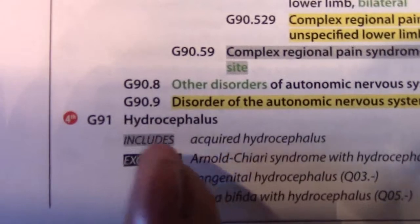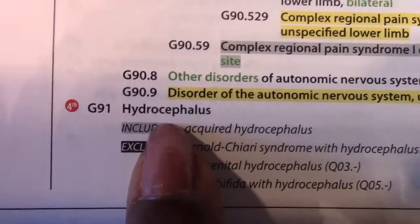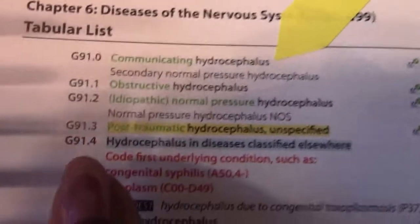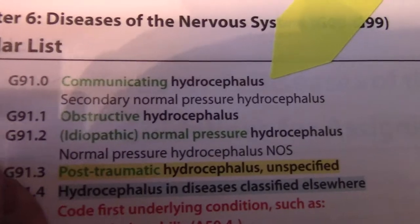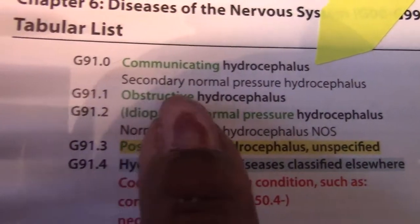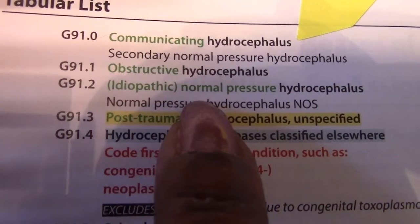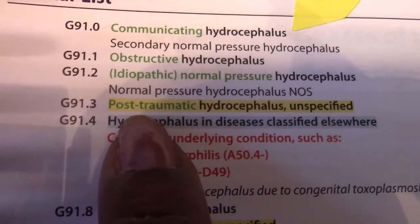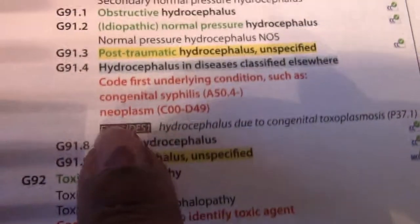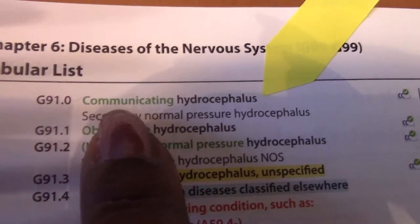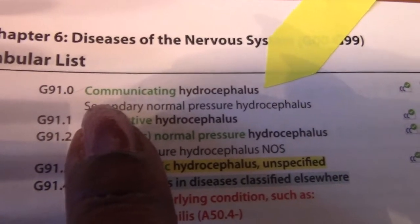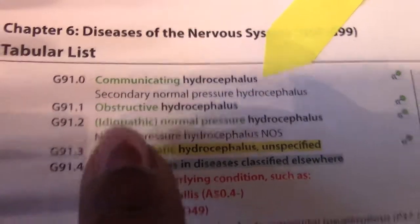Let's look at both of those codes in the tabular. Under G91, 'hydrocephalus,' you'll see G91.0 is communicating or secondary hydrocephalus, G91.9 is obstructive hydrocephalus, G91.2 is idiopathic — meaning unknown cause — and it continues with other G91 categories. The two we focused on are regular hydrocephalus and communicating, which is secondary hydrocephalus.